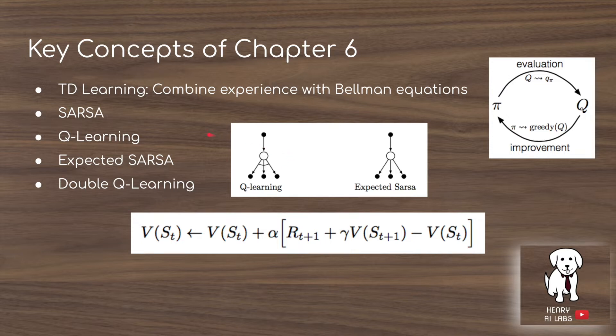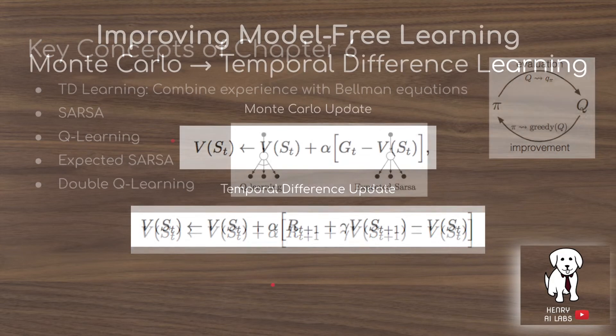We're going to look at different ways of trading off exploration and exploitation in temporal difference learning, including the SARSA algorithm, Q-learning, expected SARSA, and double Q-learning for solving the maximization positive bias that occurs in the Q-learning algorithm.